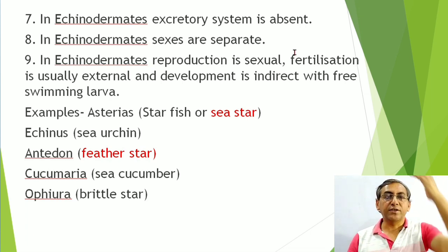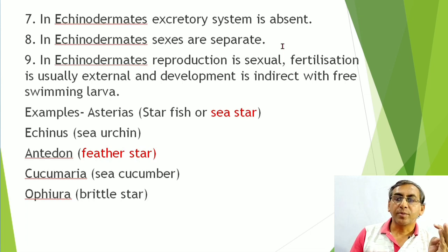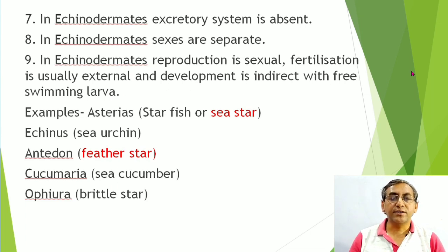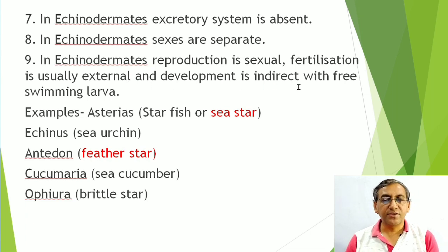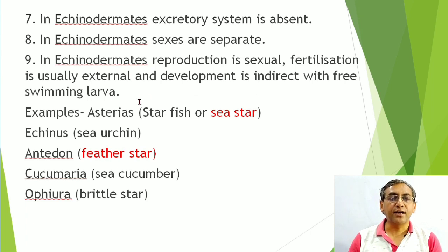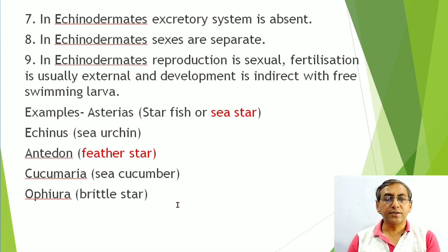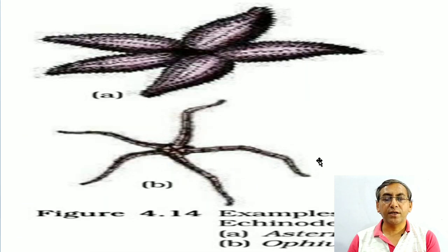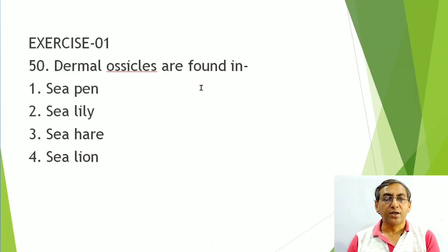Sexes are separate (dioecious). Reproduction is sexual. Fertilization is external. Development is indirect, meaning a larval stage is present with free-swimming larvae. Examples: Asterias (starfish/sea star), Echinus (sea urchin), Antedon (feather star), Cucumaria (sea cucumber), Ophiura (brittle star). NCERT gives two representative examples: Asterias and Ophiura.